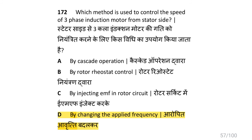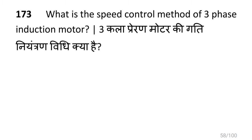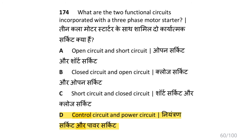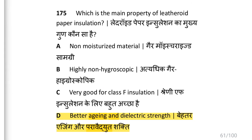The method used to control the speed of a three phase induction motor is by changing the supply frequency. The speed control method of a three phase induction motor is the cascade operation method. The two functional circuits incorporated with a three phase motor starter are the control circuit and the power circuit. The main property of leatheroid paper insulation is better edging and dielectric strength.